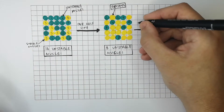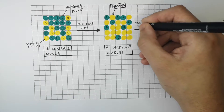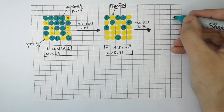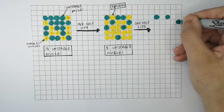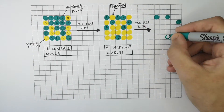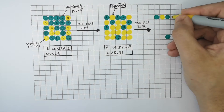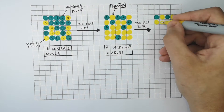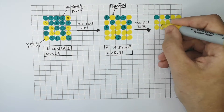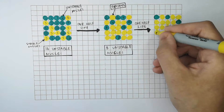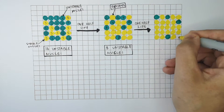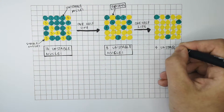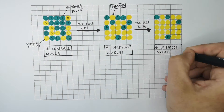One half-life later, we go from 8 unstable nuclei to 4 unstable nuclei. So in one half-life, the number of unstable nuclei decreases by half, to 4 unstable nuclei.